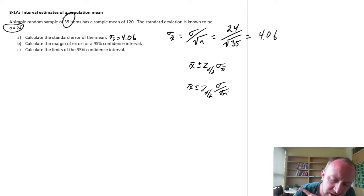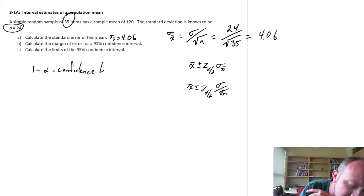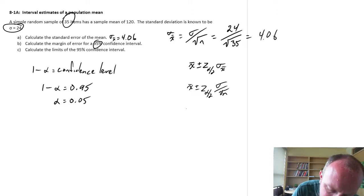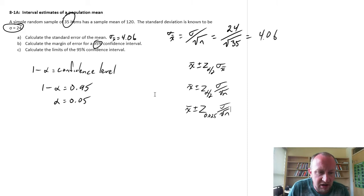So that standard error of the mean is expanded into its components. And z alpha by 2, remember 1 minus alpha is our confidence level. How confident are we that the population mean exists within the limits that we're going to calculate? So if we're doing a 95 percent confidence interval, then that means that 1 minus alpha is equal to 0.95, which means alpha is equal to 0.05. So then coming back to our formula here, this is x bar plus or minus z alpha divided by 2, so 0.025 sigma square root of n.